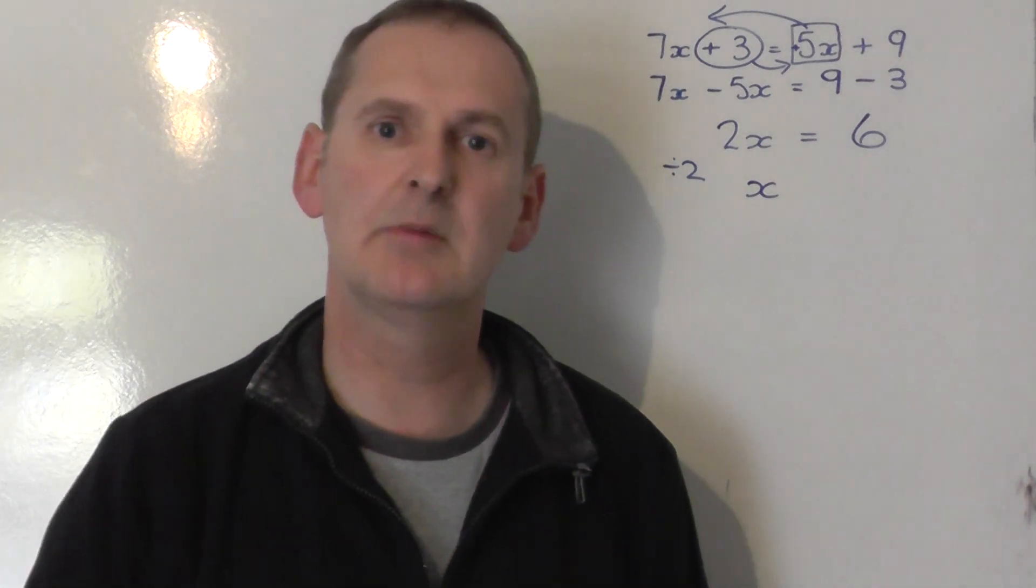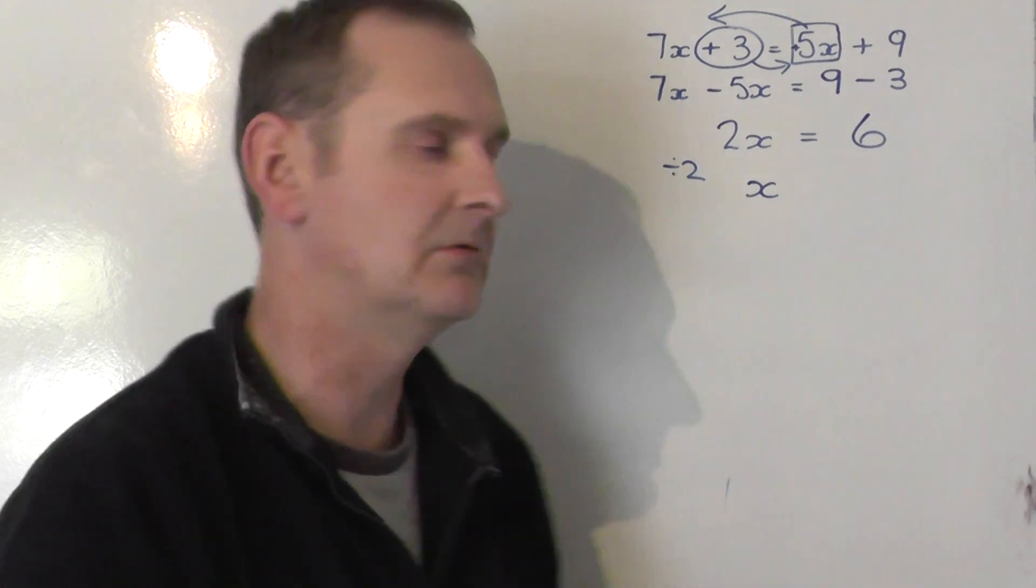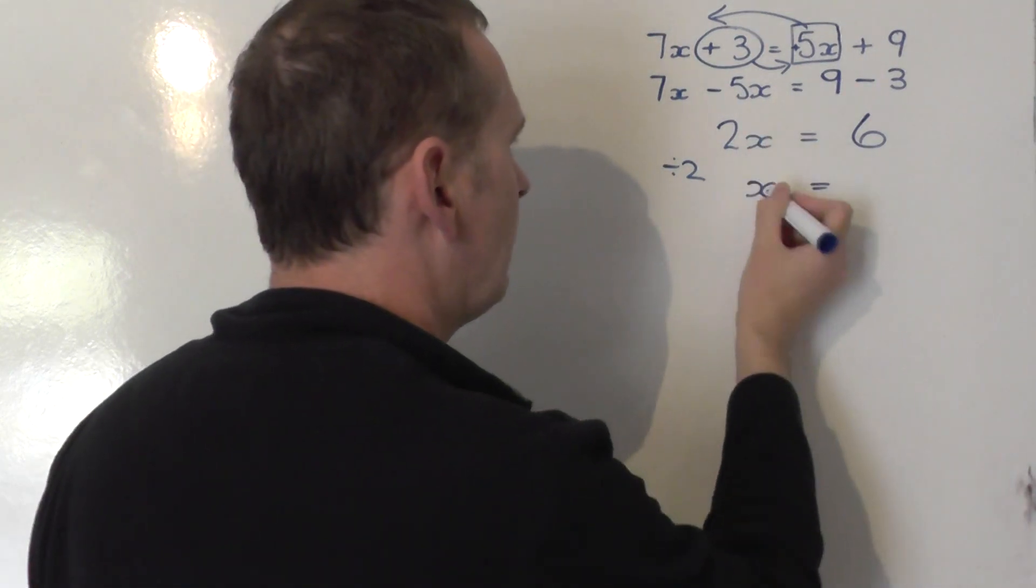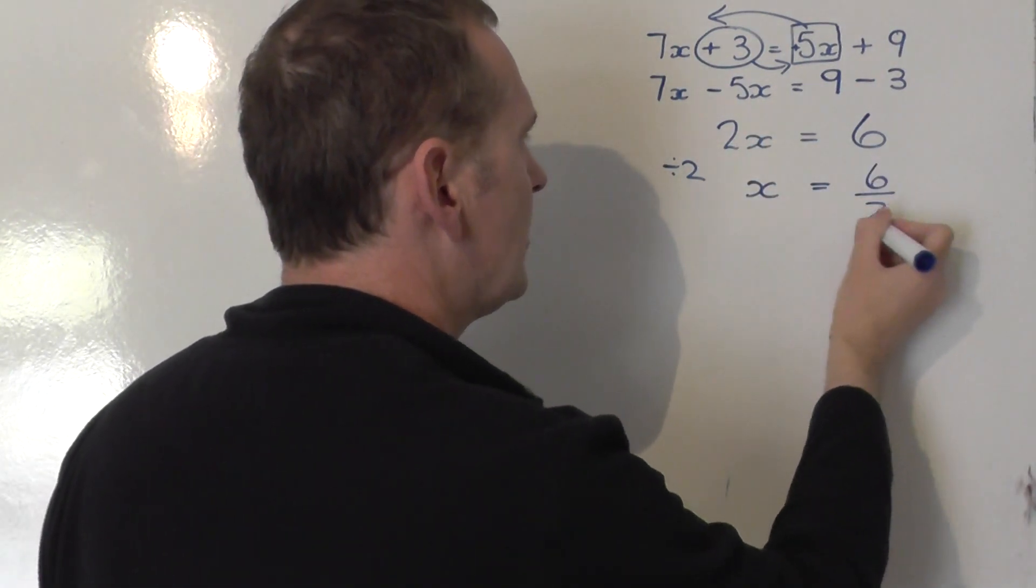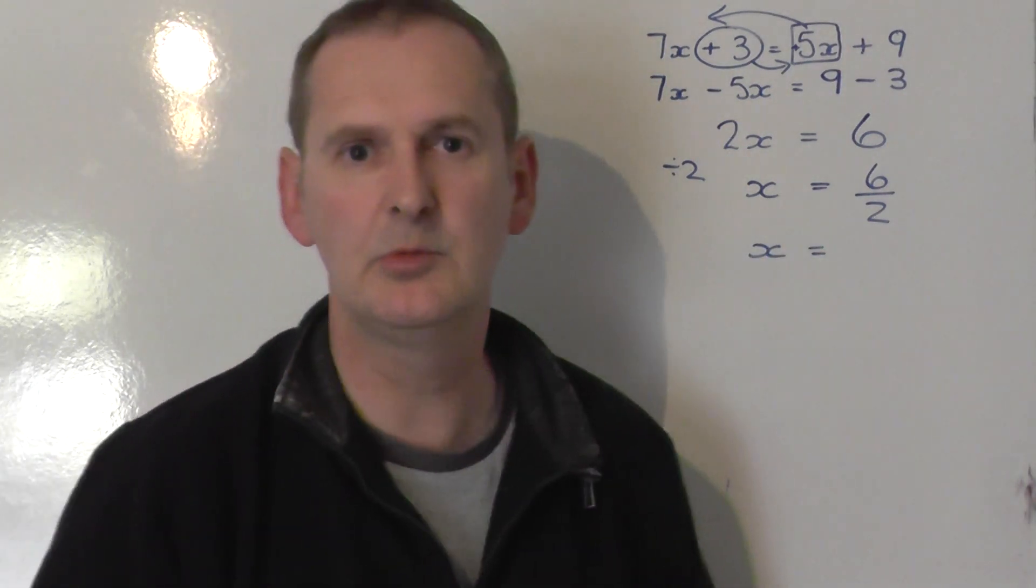But remember, this is like a balance. If you share the left-hand side by 2, you must share the right-hand side by 2. So, share that by 2. And we share the 6 by 2. Which, because it's a nice whole number answer, we can work out.